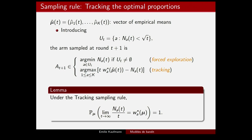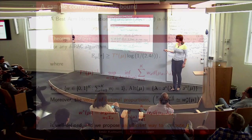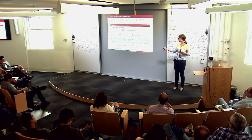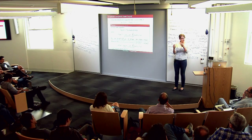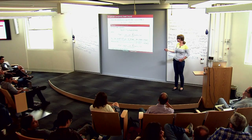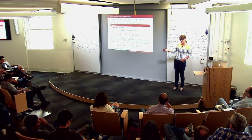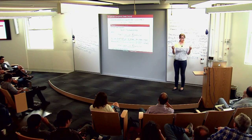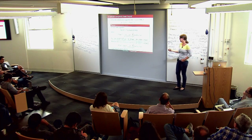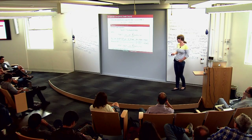Question: why is the infimum not zero? Answer: you have to consider all bandit models in which the optimal arm is different. For example, this infimum is the minimum of the infimum when arm two becomes larger than arm one, arm three becomes larger than arm one, and so on. Each of these optimization problems has a closed-form solution. You cannot take lambda_a = mu_a because that doesn't satisfy the constraint — you have to change the optimal arm. In mu the optimal arm is one, and you need a lambda in which the optimal arm would be two or three or something else. So yes, these are all the alternative possible bandits.